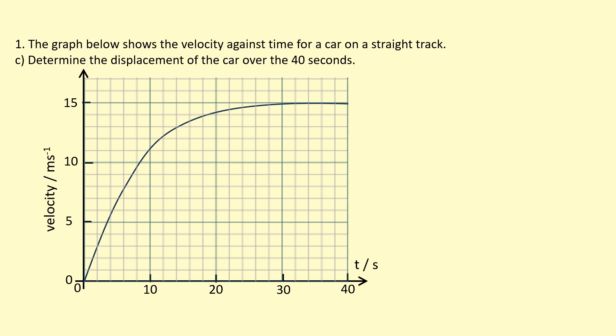Part C of the question, I'm asked to determine the displacement of the car over 40 seconds. I'm going to use a different property of the graph now, which is the area under the graph. The area under a velocity time graph is equal to displacement, so I'm going to have to figure out the area under this curve here.